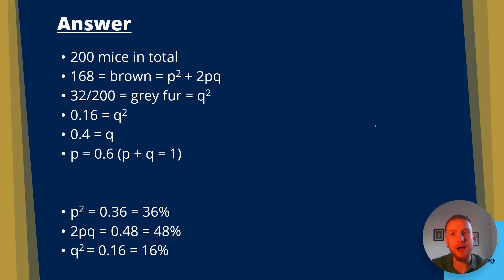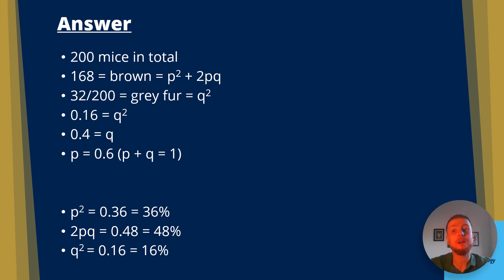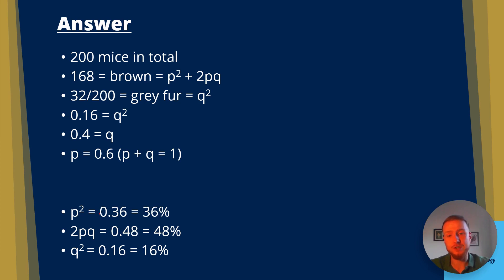To recap the mice example: 200 mice total, 168 brown (P squared plus 2PQ), 32 grey (Q squared). Q squared equals 0.16, so Q equals 0.4 and P equals 0.6. P squared is 0.36, so 36% are homozygous dominant. 2PQ is 2 times 0.4 times 0.6 equals 0.48, so 48% are heterozygotes. Q squared equals 0.16, so 16% are homozygous recessive.